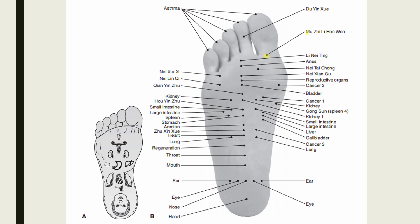Mu Ji Li Han Wen is located at the midpoint of the transverse crease of the great toe at the metatarsophalangeal joint, on the plantar surface. Indications include inflammation of the testes and herniation pain.